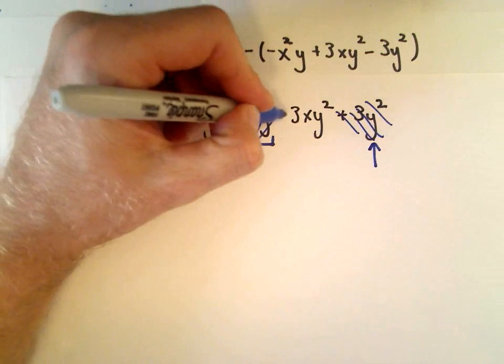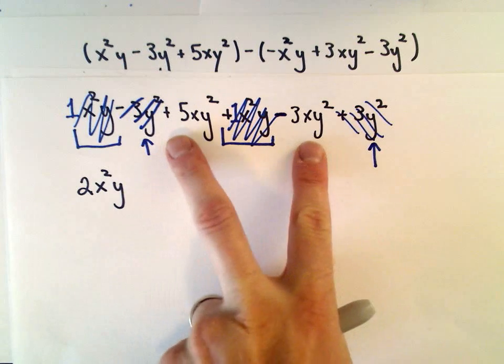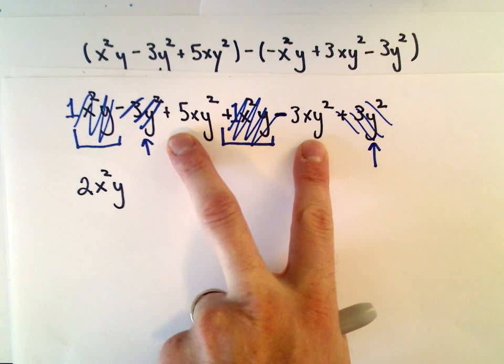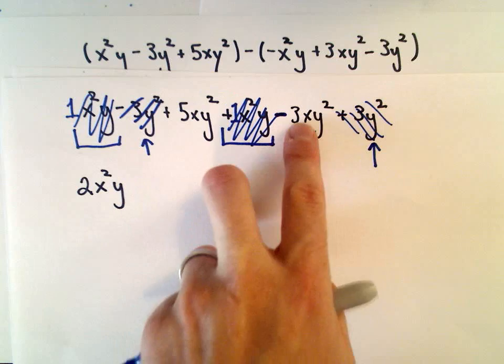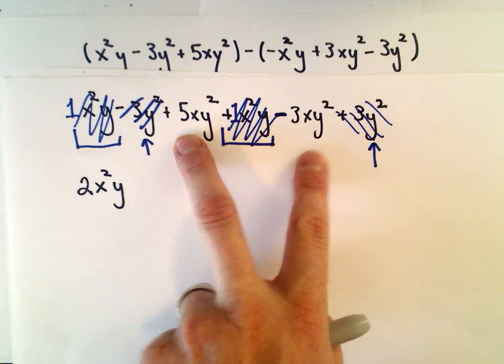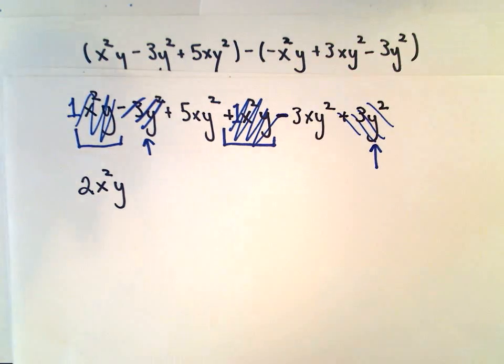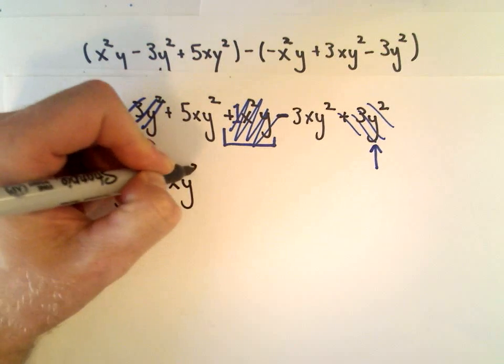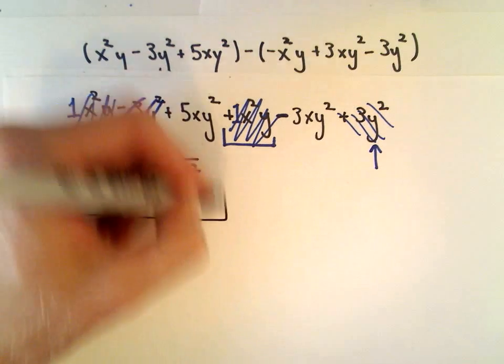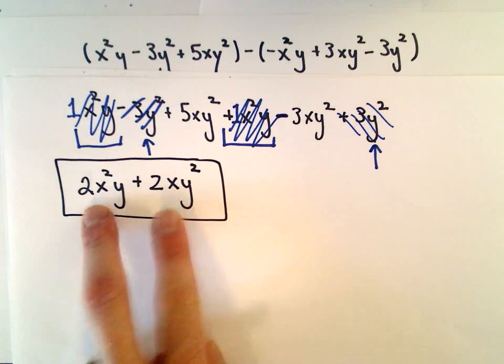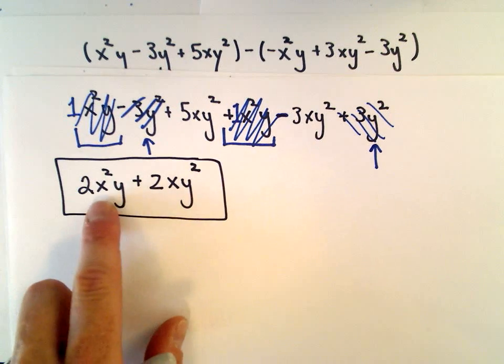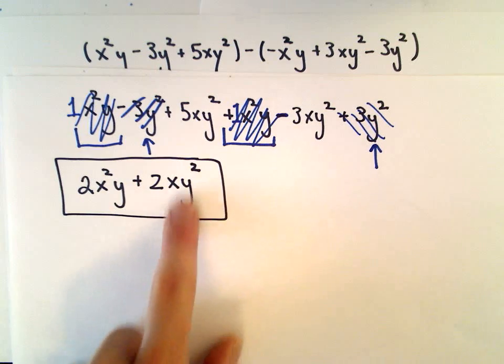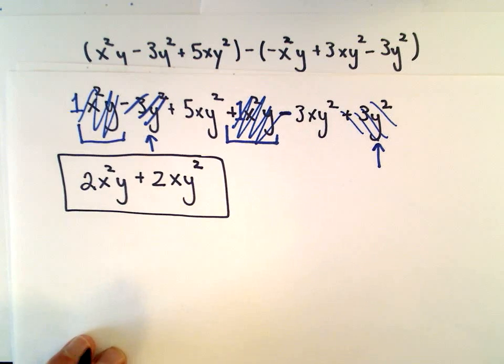And then the terms that are remaining - we have a 5xy squared and a negative 3xy squared. If we do 5 minus 3, that's going to leave us with positive 2xy squared. These are not like terms - they both involve x and y, but here the x is being squared and on the second term the y is being squared, so we can't combine those any further.